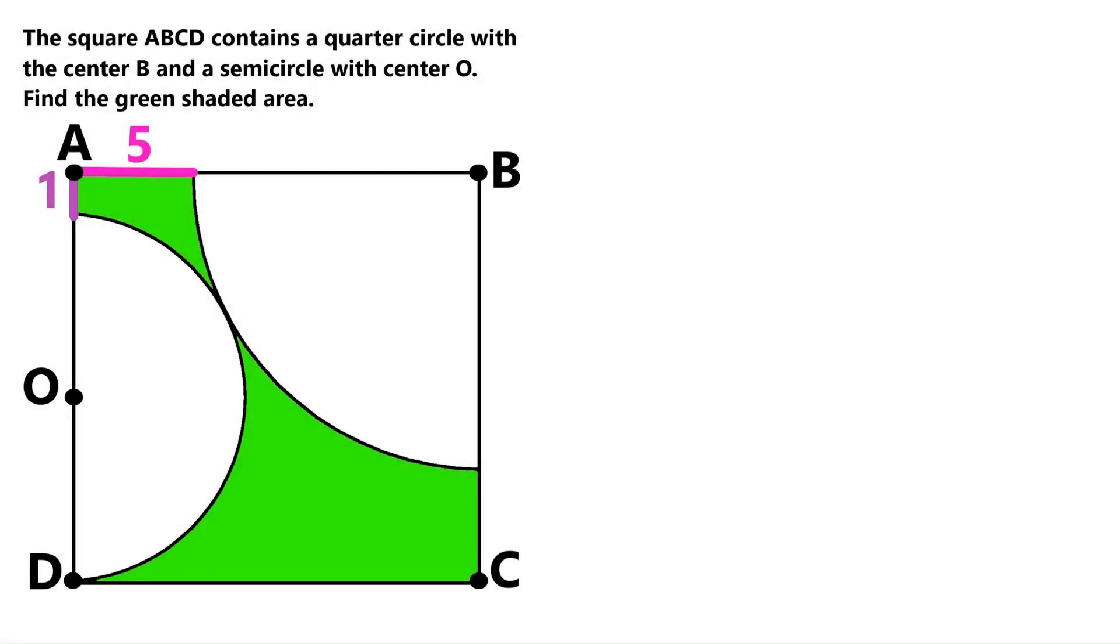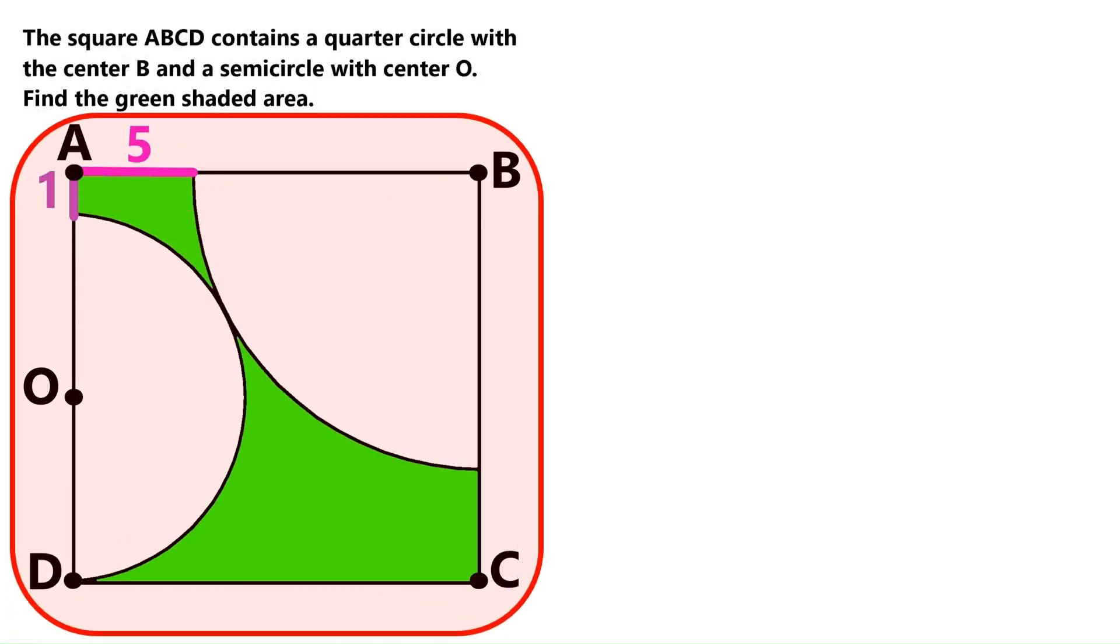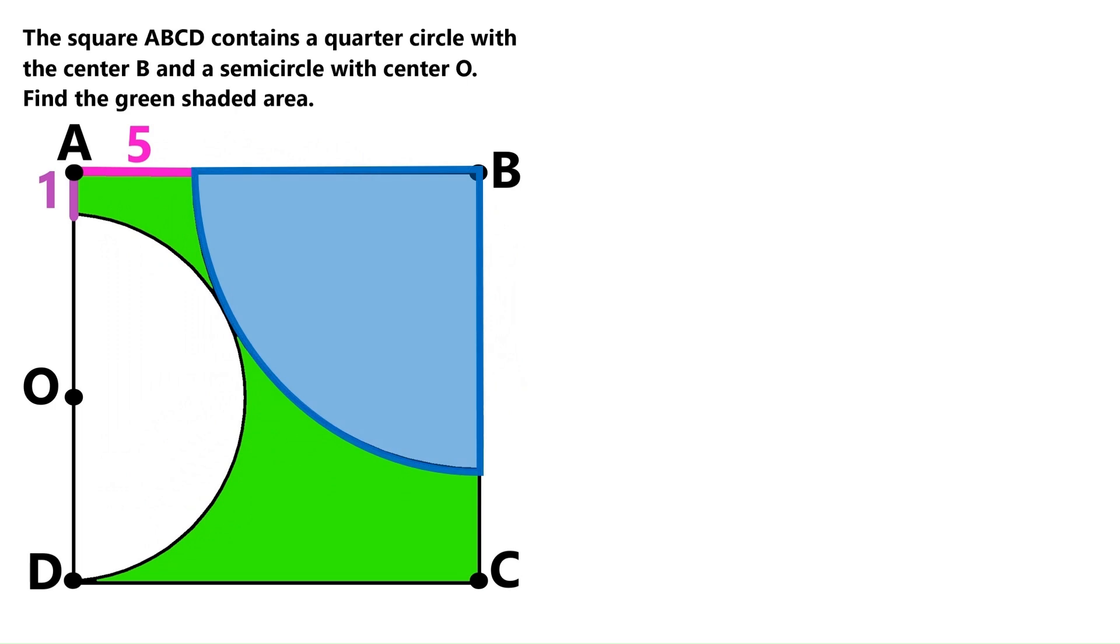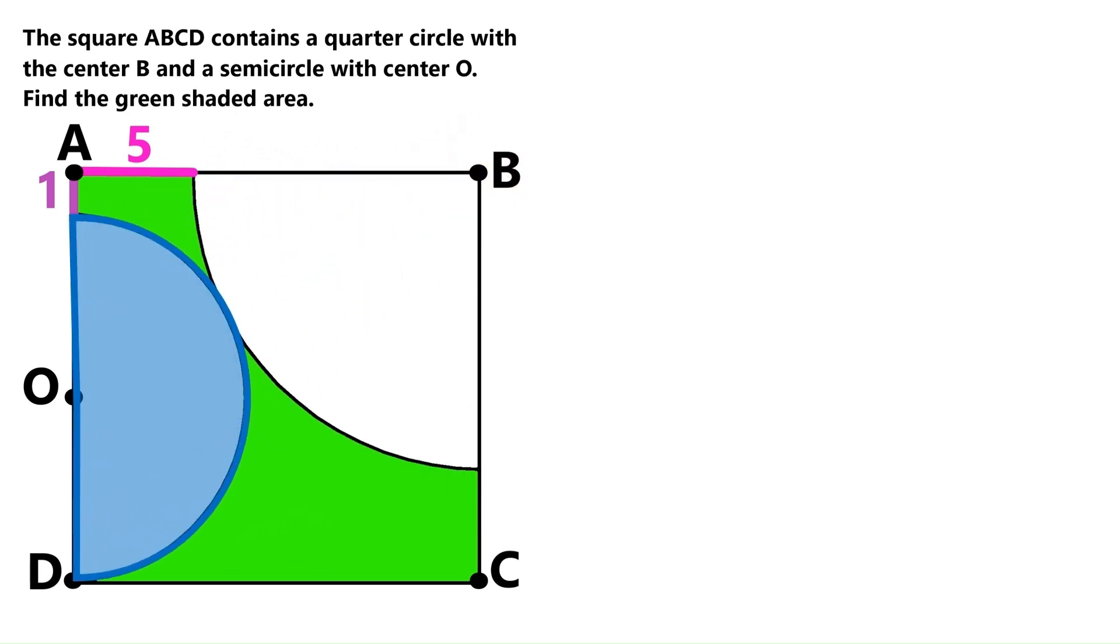In this super exciting geometry problem we got this square ABCD and there is this quarter circle inside it and its center is the vertex of the square. And there is also a semicircle tangent to the quarter circle and its center is this point O. The only clues we have are that this distance here is 5 and that this distance here is 1. And we are asked to find the green area which includes this small region up here as well as this larger region below.